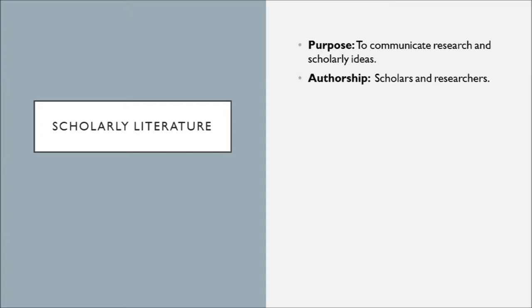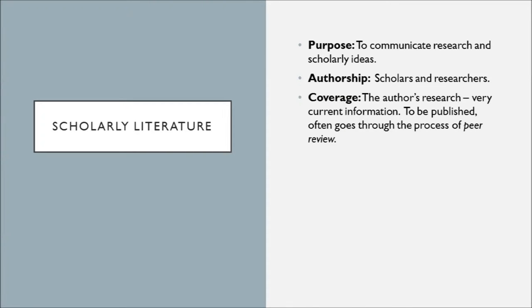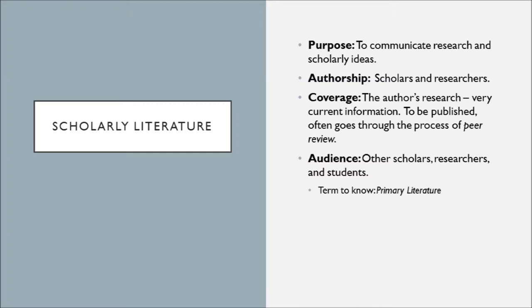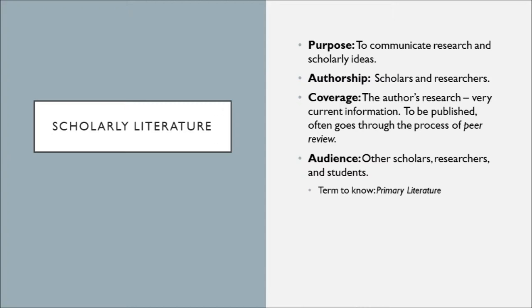Scholarly literature's main purpose is to communicate research and scholarly ideas. Authorship includes scholars and researchers who are experts in the field, reporting on their own research — what they're doing and working on. Scholarly publications can go through the process of peer review, where information is vetted by a group of peers — other researchers in that field — before it is published in a journal. The audience is other scholars, researchers, and students. Of particular importance is the term primary literature, which means this is someone's original reporting of phenomena they have observed. In the sciences, this means experiments a researcher has conducted themselves. In other fields like history, this might be letters written by an author or original correspondence between two people.